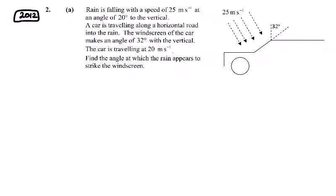The 2012 relative velocity question. We have rain falling with a speed of 25 m/s at an angle of 20° to the vertical. It's normally to the horizontal, so let's just see here. We have rain falling like this. We imagine that this is the windscreen continuing up this way.